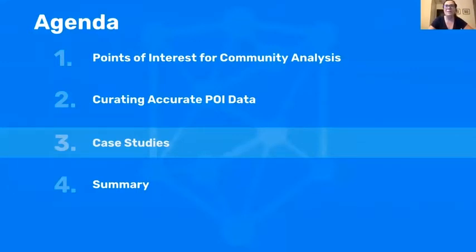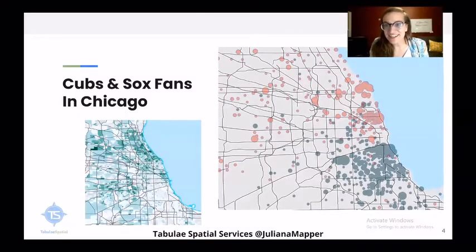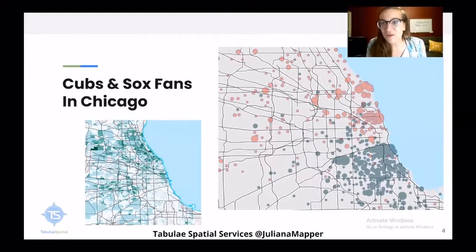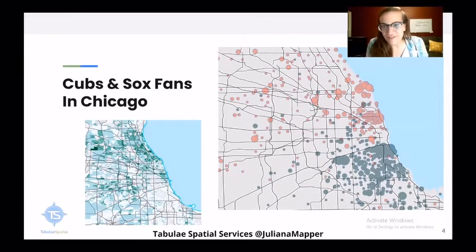Now Julianna is going to talk through some of her use cases for SafeGraph data. I'm from Chicago, Illinois, and we are home to two different baseball teams — the Chicago Cubs, who are our north side team, and the Chicago White Sox, who are on the south side. I was really curious if we could understand: is there a line in Chicago where we can see where the Cubs and Sox fans come from? Can we better understand their home locations? I was able to use SafeGraph data to do this. The small map on the left-hand side, in shades of green, uses SafeGraph data from May, June, and July of 2019 — so no COVID effect here.